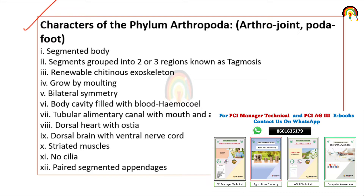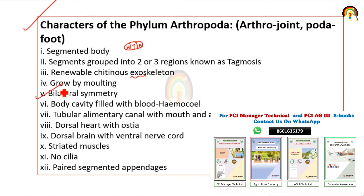So what are the characteristics of Phylum Arthropoda? The body is segmented into head, thorax, and abdomen. The body is grouped into two or three regions, which is called tagmosis. There is a chitinous exoskeleton, and the symmetry will be bilateral symmetry.